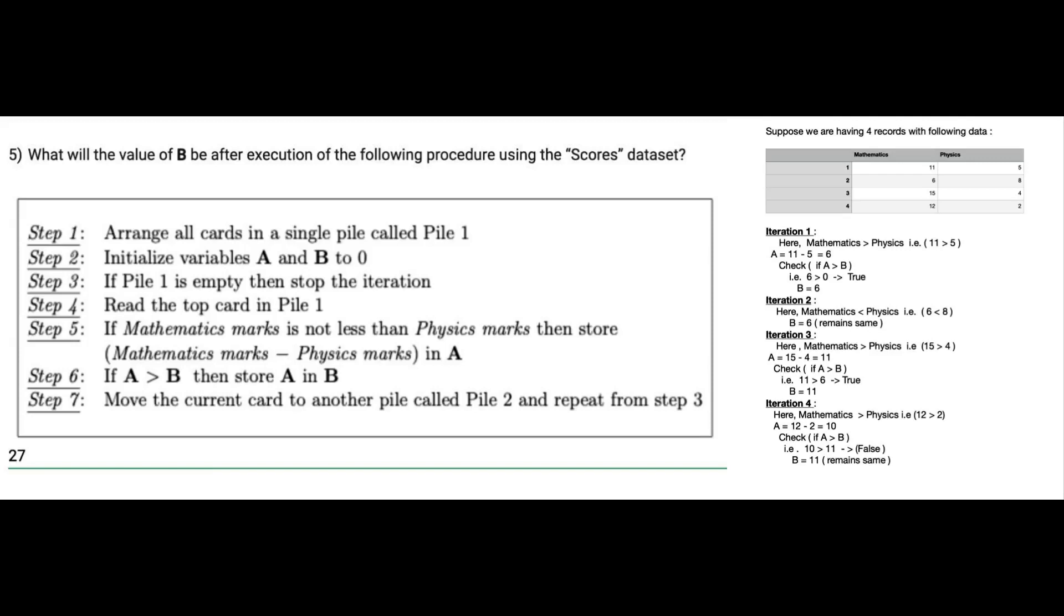Now in the next iteration, mathematics marks is greater than physics marks, so their difference, which comes out to be 11, will be stored in A. Now in the next condition, as A is greater than B, that is 11 greater than 6, which comes out to be true, so B will get the value 11.